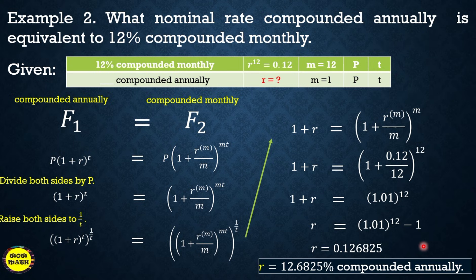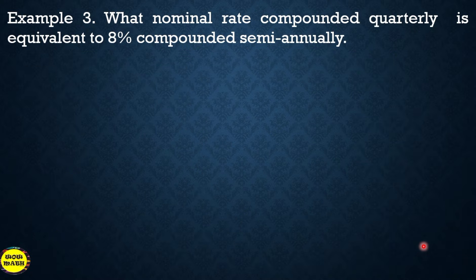Therefore r = 12.6825% compounded annually. That is the equivalent rate to 12% compounded monthly.